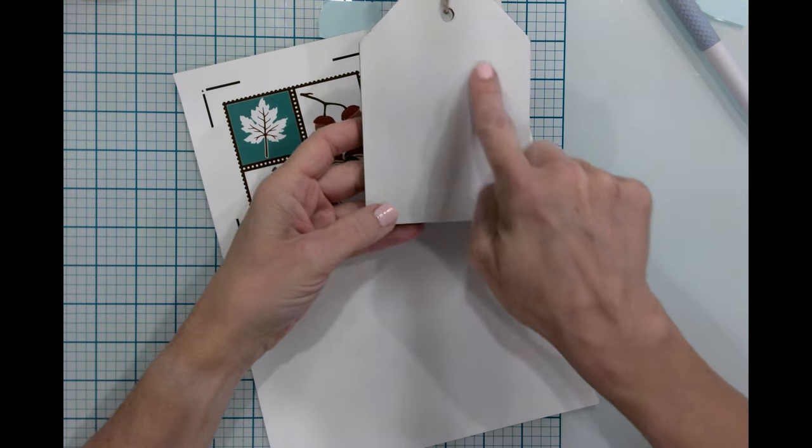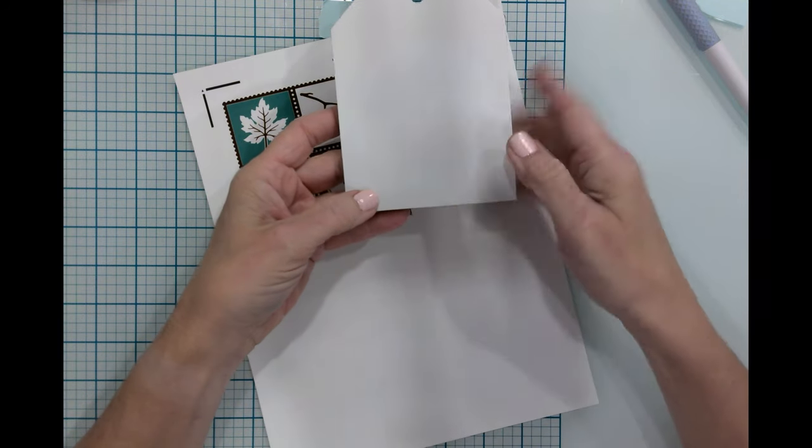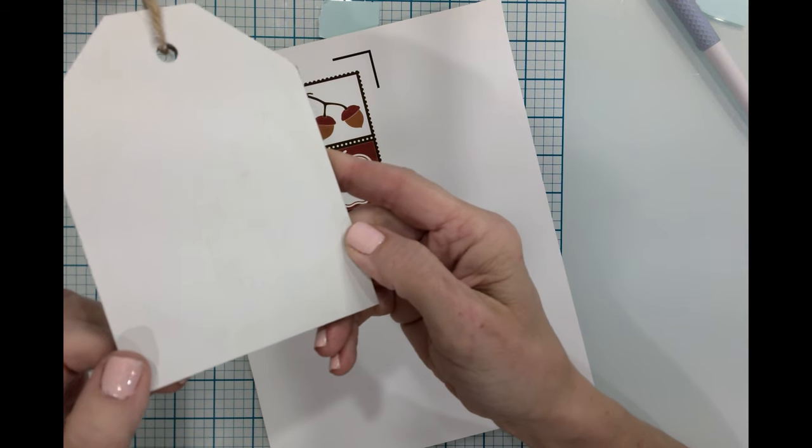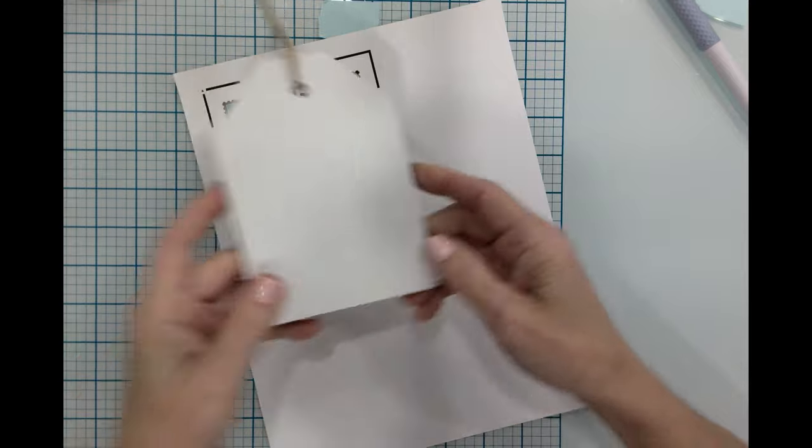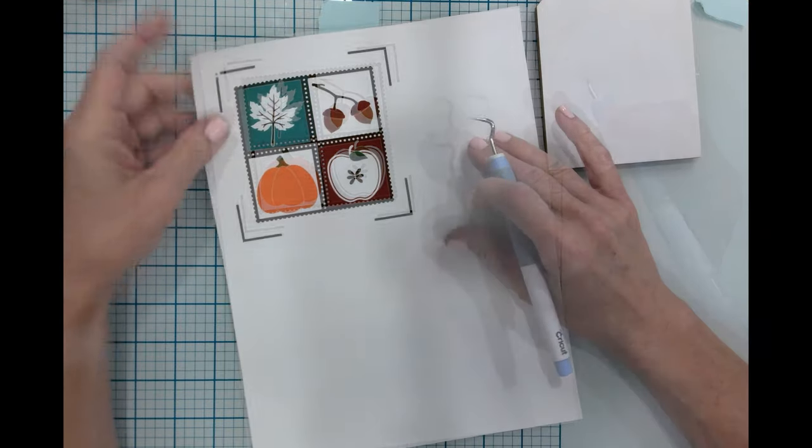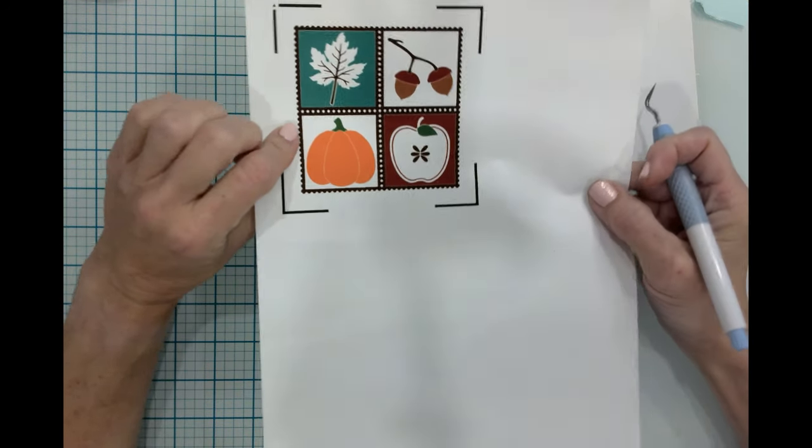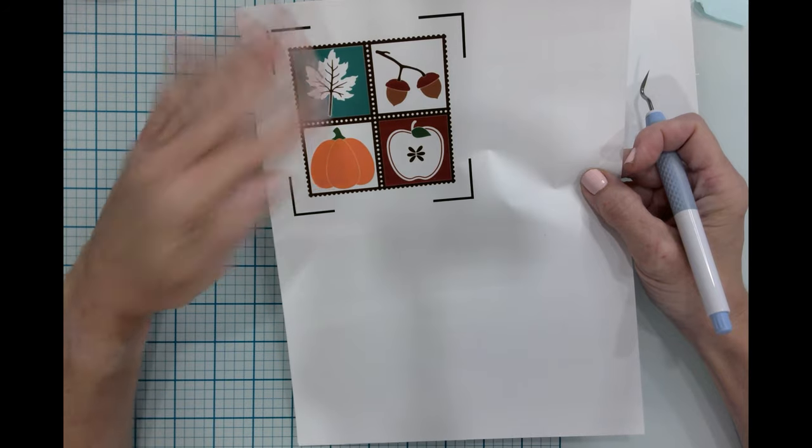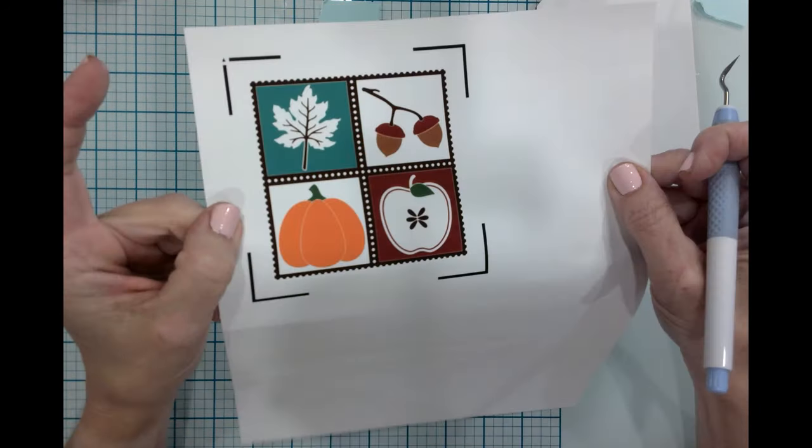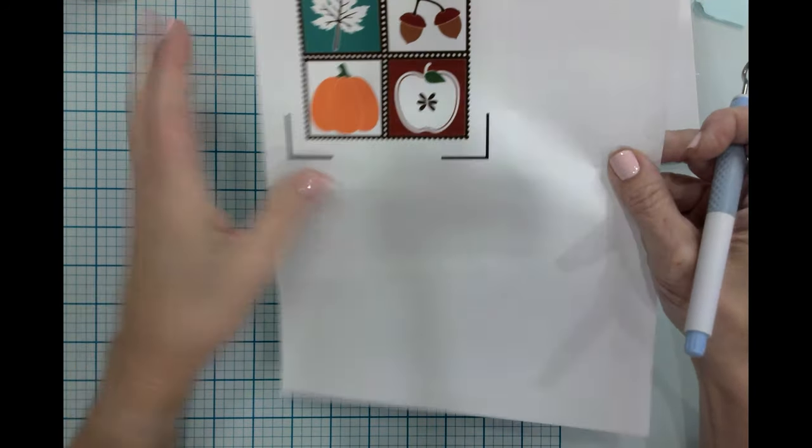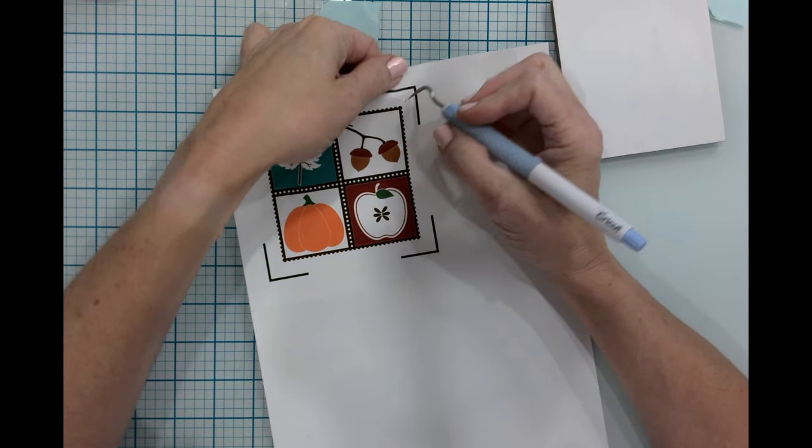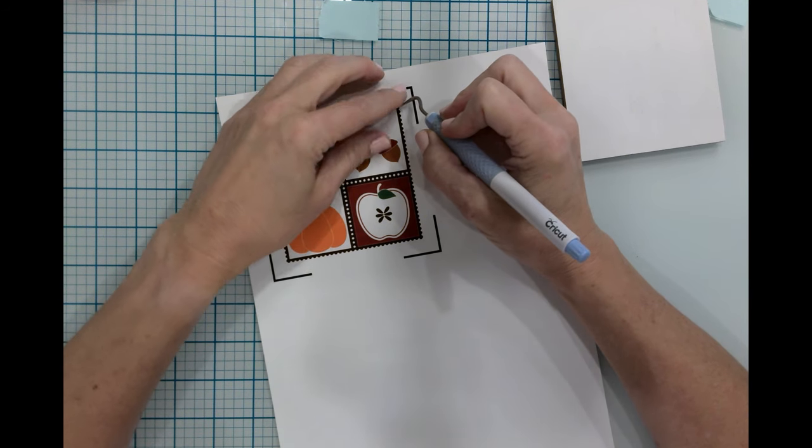You can actually still see some of the ghost of the image that was on there. So I didn't like that, and I decided to go ahead and cover it completely with some print and cut vinyl. What I did is I found this image in Design Space. As a side note, in addition to all the materials, you can find this Design Space link. It has all of the projects all on one canvas for you.